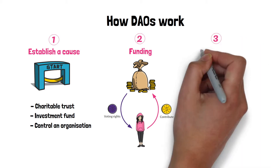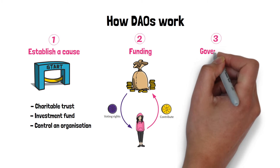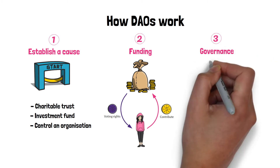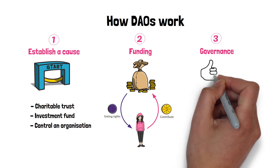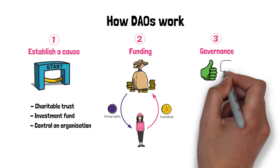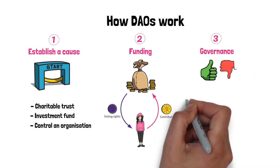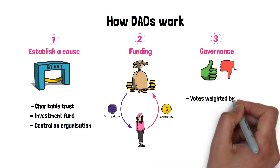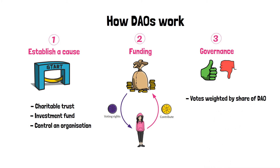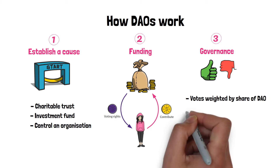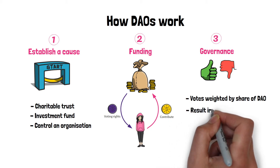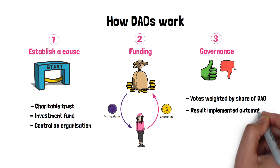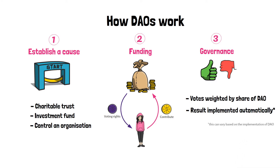Moving forward, all key decisions surrounding the organization are made through governance. All users who own the DAO tokens vote on proposals. The weight of their votes will be proportional to the share of the tokens they hold. So, if the DAO issued a total of 1,000 tokens and you hold 100 of them, your vote will carry a 10% weight. When a consensus is reached, the result of the vote can be automatically actioned by the DAO's code.